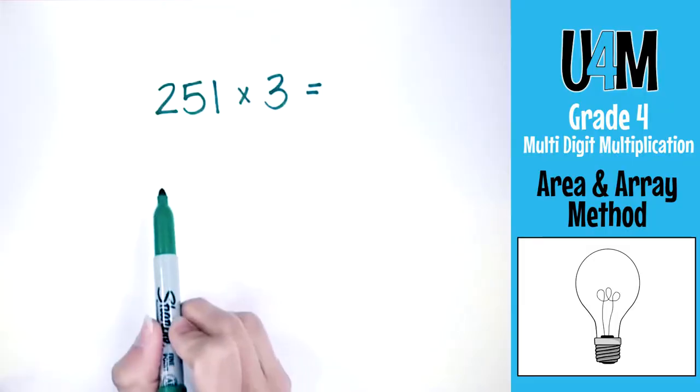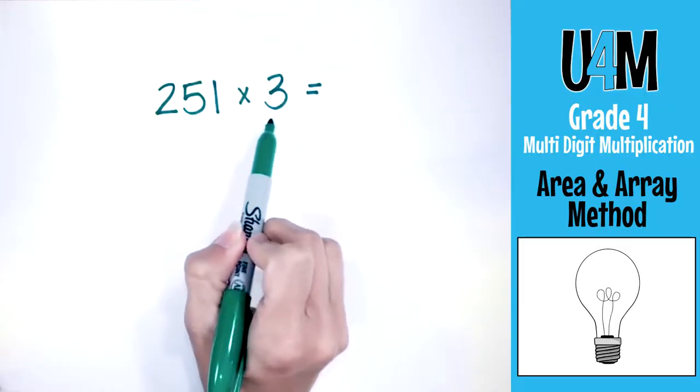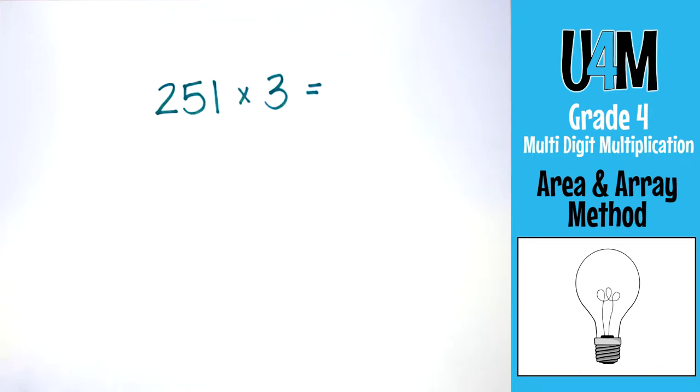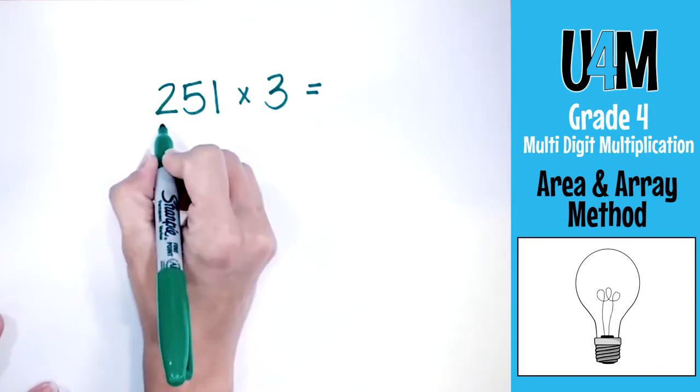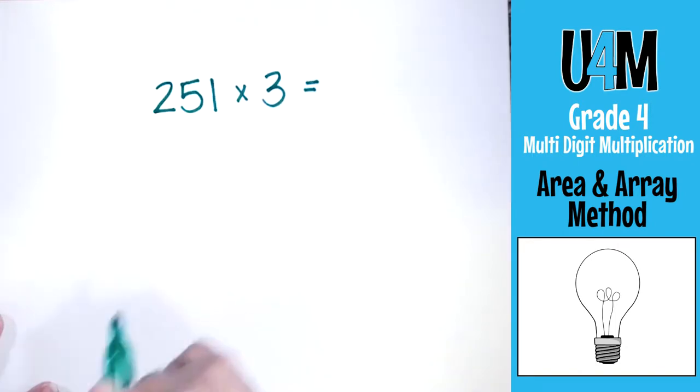In this problem we have 251 times 3. The first thing we have to do is decompose these numbers. We're going to take 251 and break it down by expanded form. Students have a good understanding of this based on our place value lessons — if they don't, go back to our place value videos and take a look at how to decompose numbers to their certain place values.